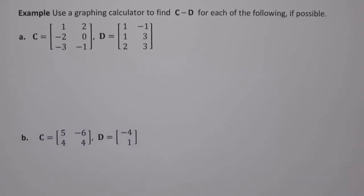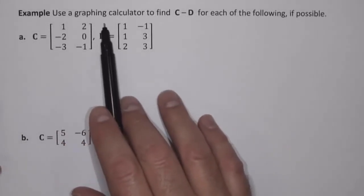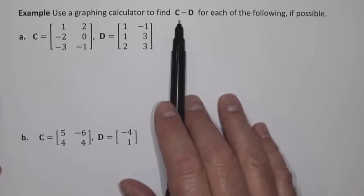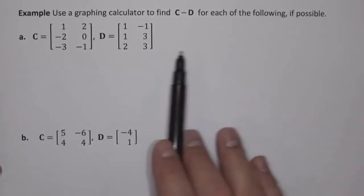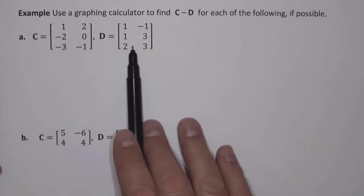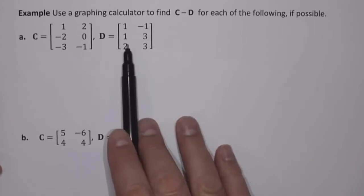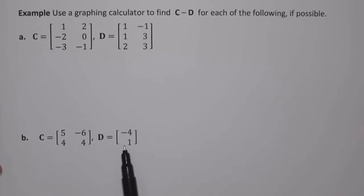In this video, I want to show you how to use a graphing calculator to do matrix subtraction. Use a graphing calculator to find C minus D for each of the following, if possible. In Part A, we have a 3 by 2 matrix and another 3 by 2 matrix. In Part B, we have a 2 by 2 matrix and a 2 by 1 matrix, and we want to do matrix subtraction, C minus D.